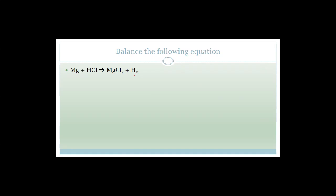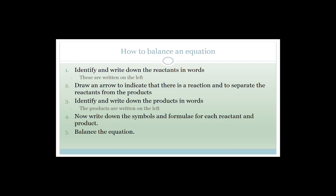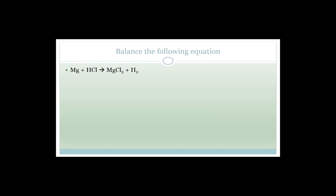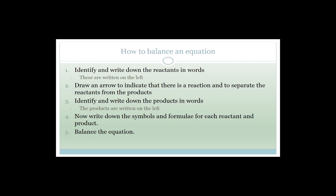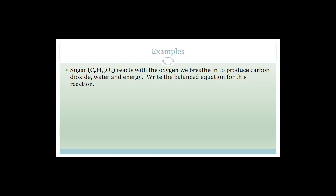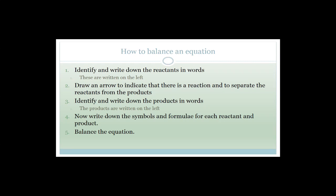Now we're going to balance a couple of equations. We're going to learn how to represent chemical change and balance equations. First, you identify and write down the reactants in words — these go on the left. Then draw an arrow to indicate a reaction and separate reactants from products. Then identify and write down the products in words — these are written on the right. Finally, write down the symbols and formulas for each reactant and product, then balance the equation.